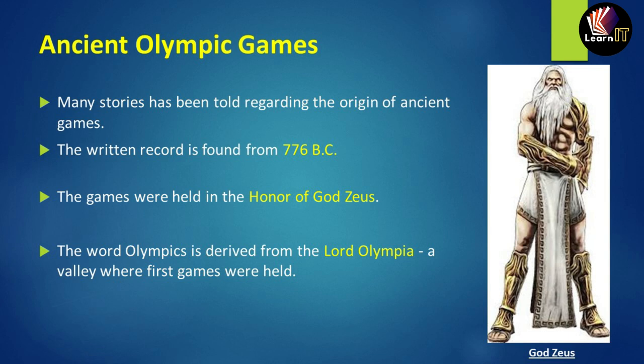Now let us talk about the ancient Olympic games. There are many stories regarding the origin of these games, but the first recorded Olympics was from 776 BC. It was a game held in the honor of the Greek god Zeus. The word Olympics is derived from Olympia, a valley where the first games were held.